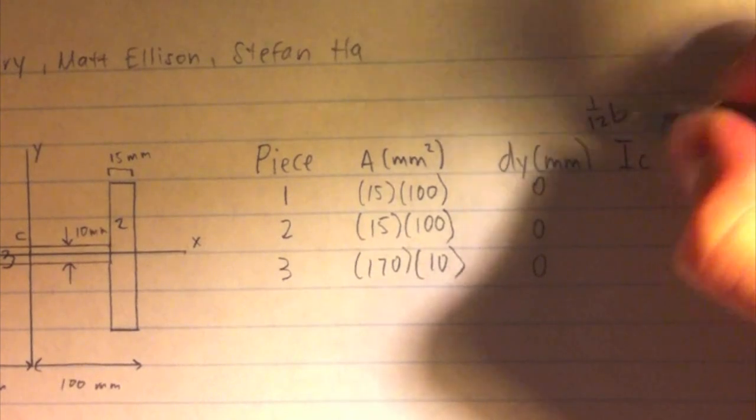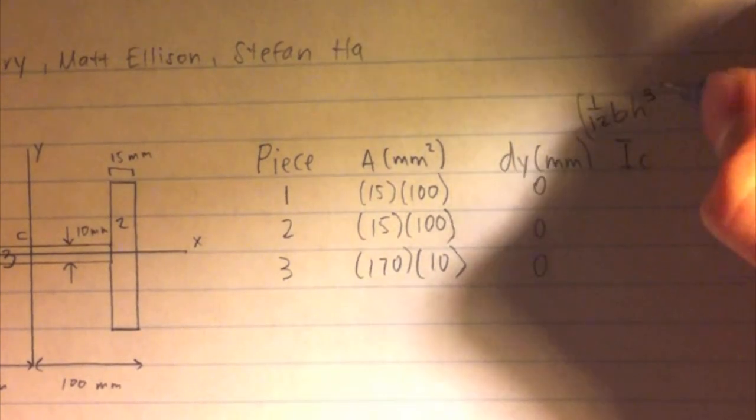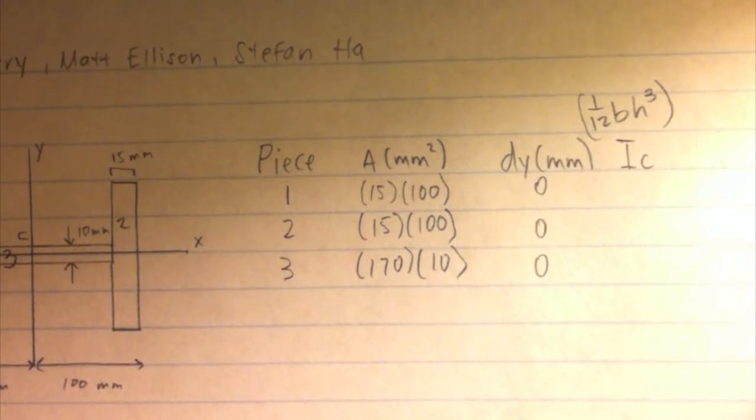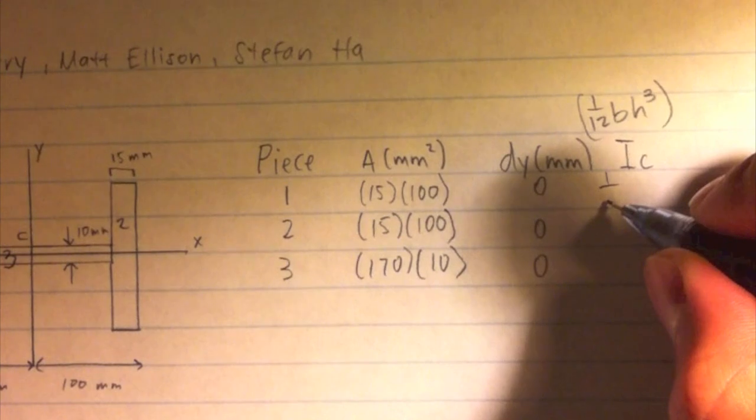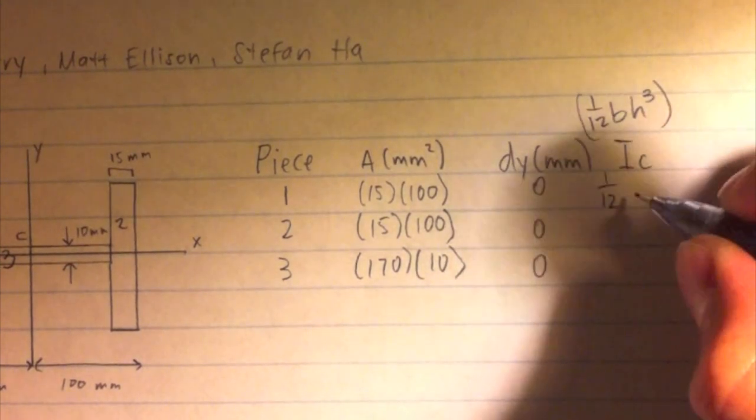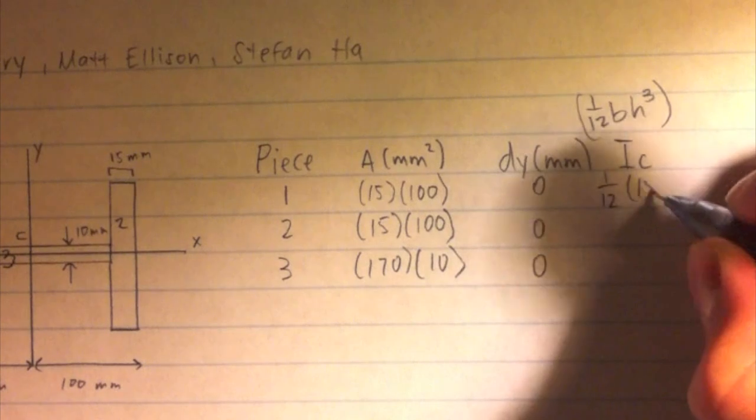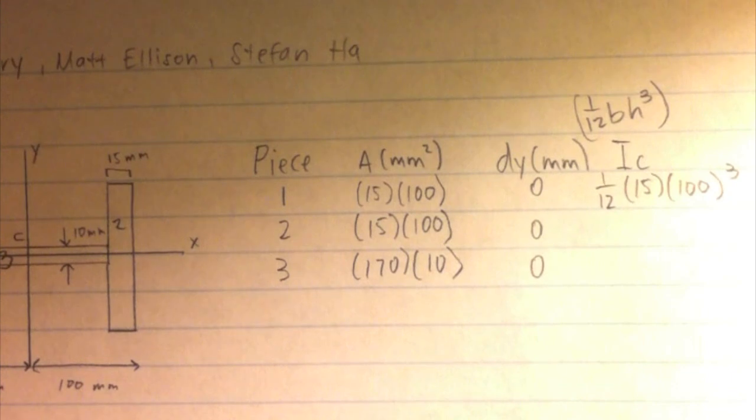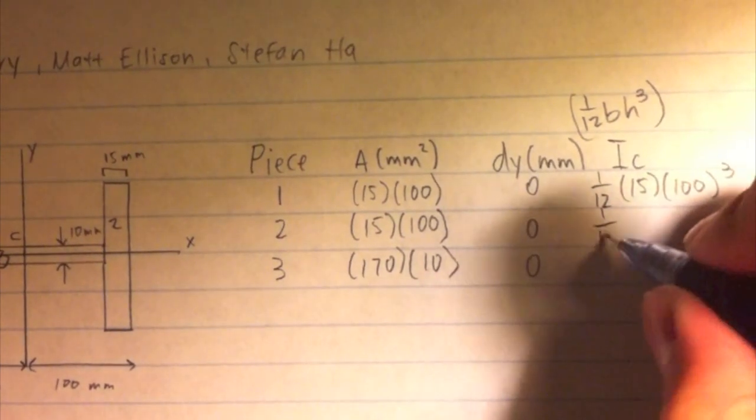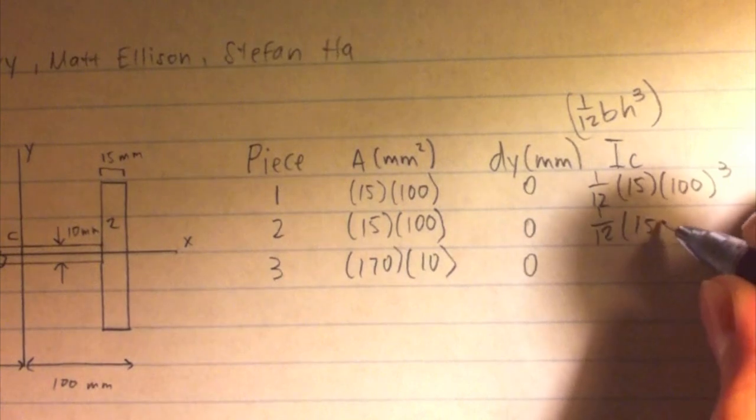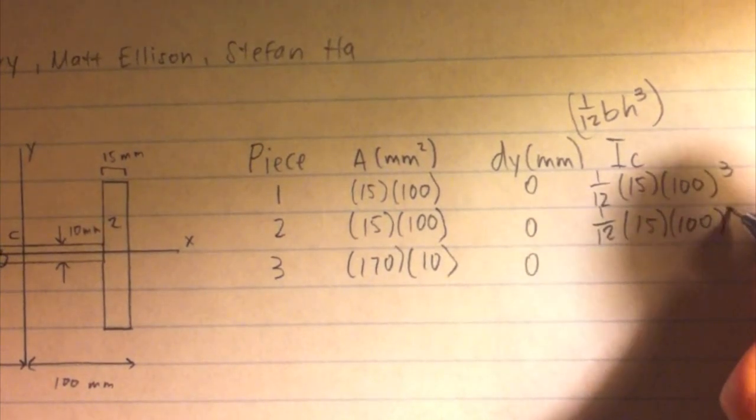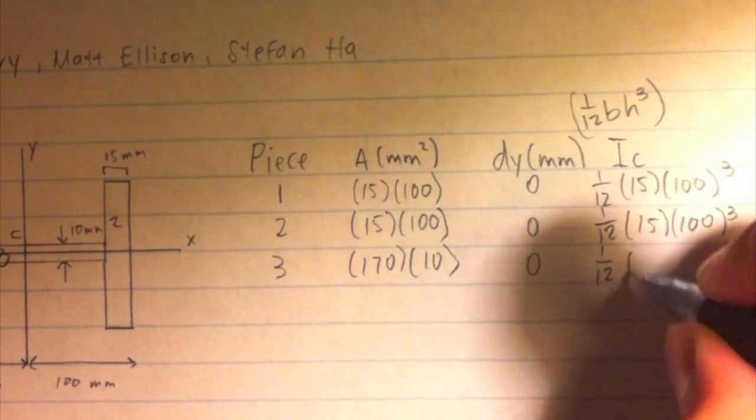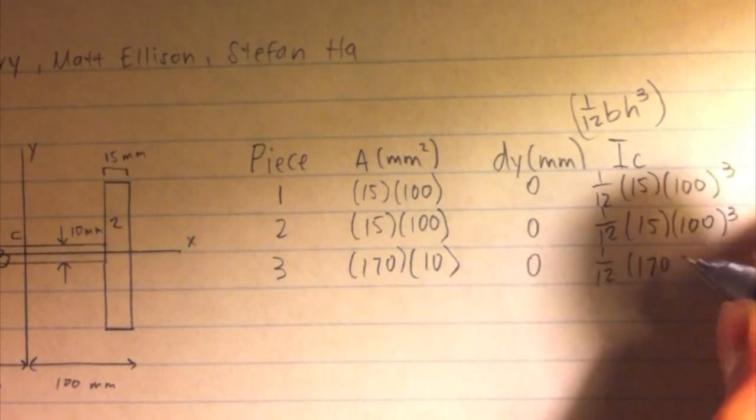Now we move on to finding the moment of inertia for each piece around its own centroid, which we can find with the formula specific to a rectangle: 1/12 times b times h cubed, b being the base of the rectangle in millimeters and h being the height in millimeters. This gives us a moment of inertia for pieces 1 and 2, since they are identical, of 1/12 times 15 millimeters times 100 millimeters cubed, and for the last piece, 1/12 times 170 millimeters times 10 millimeters cubed.